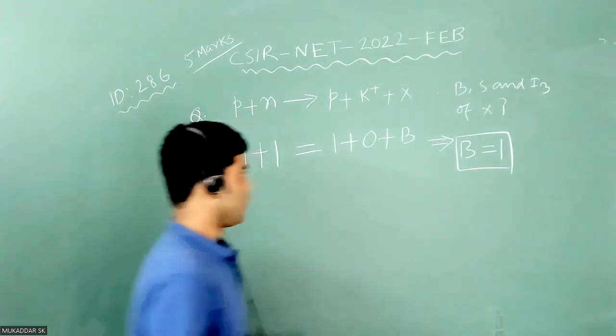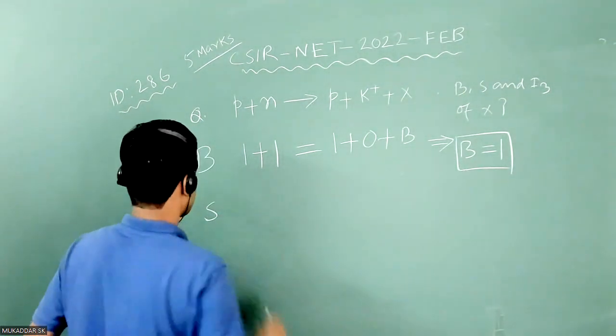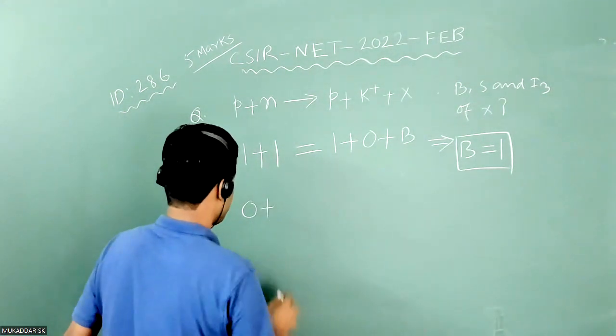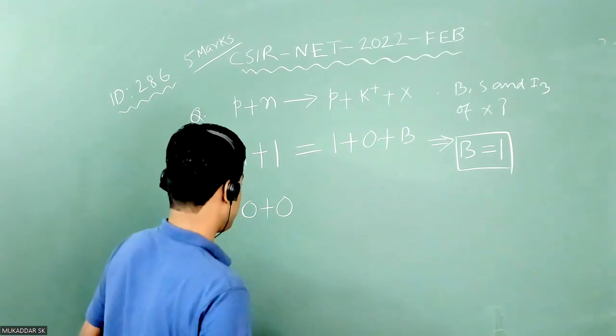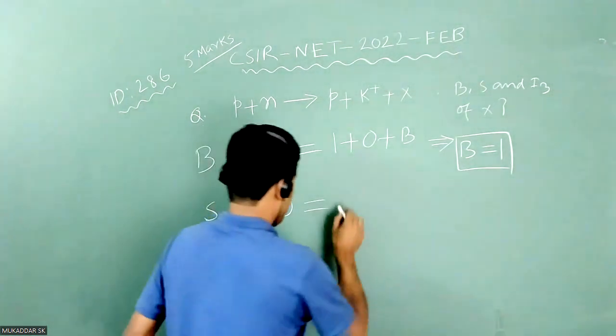Now we will check strangeness conservation. So proton is not strange particle, so s quantum number will be zero. Same is true for neutron. It will be zero. On the right hand side you have again proton. So s will be zero.